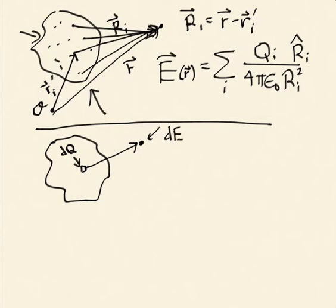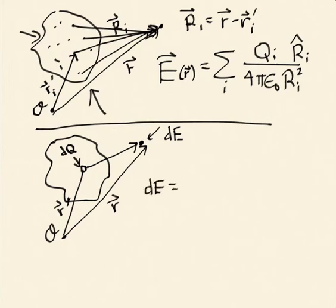DQ here, and it's going to create a little bit of electric field, DE, over here. And I can use the same coordinates as before. I'm going to have this be the origin, I'm going to have this be R prime for that little bit of DQ, and this be R.